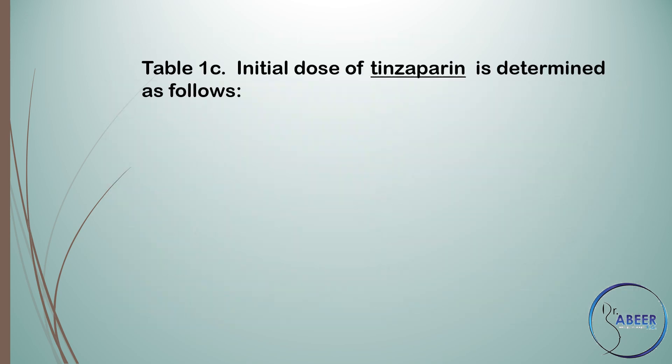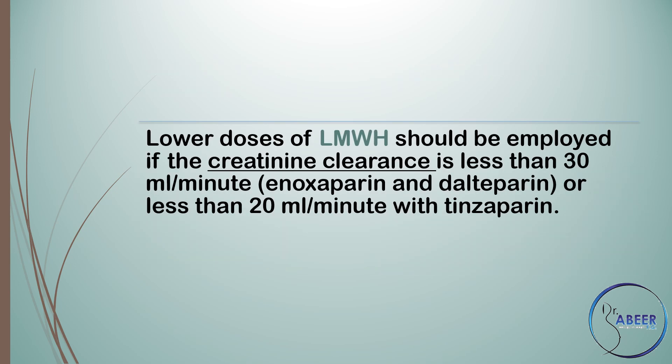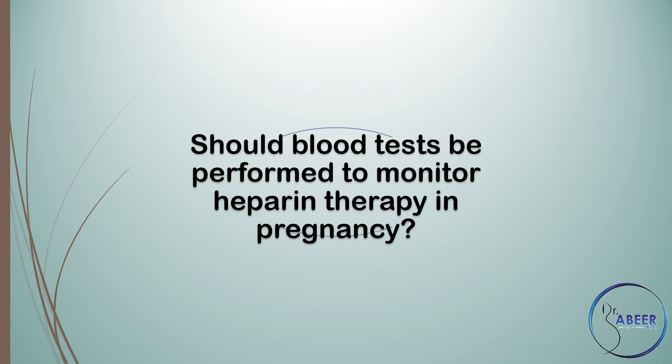Table 1C: Initial dose of tinzaparin based on booking or early pregnancy weight is 175 units per kg once daily. Lower doses of low molecular weight heparin should be employed if the creatinine clearance is less than 30 ml per minute for enoxaparin and dalteparin, or less than 20 ml per minute for tinzaparin.